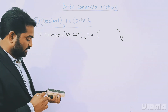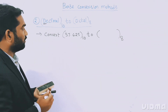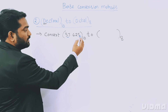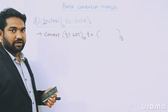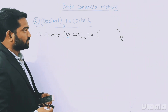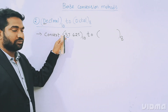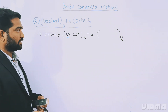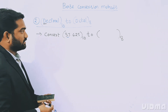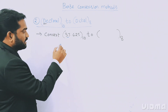In this particular question we have two values — an integer value and a fractional value. For the integer part we just need to divide, and for the fractional value we just need to multiply. This is the same procedure we followed in the previous class.